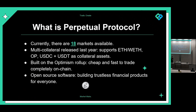One cool feature is the multi-collateral feature released last year, which allows you to use Ethereum, wrapped Ethereum, OP token, USDC, and USDT as collateral assets. We're built on the Optimism rollup, making it very cheap and fast to trade completely on-chain. Perhaps most importantly, Perpetual Protocol is open-source software. The aim is to build trustless financial products for everyone — not just for a certain group of people — and to really promote financial inclusion and access to new investment products.